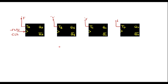The T flip-flop is a toggle flip-flop which will toggle only when the input is 1. If the input is 0 there is no change in the output. QA, QB, QC, and QD are the outputs of these flip-flops respectively.